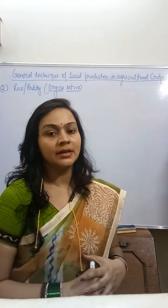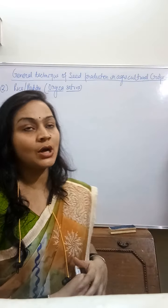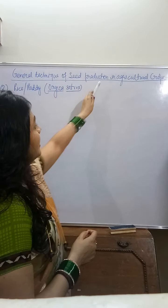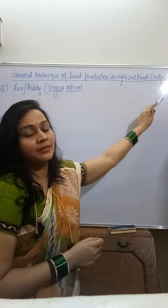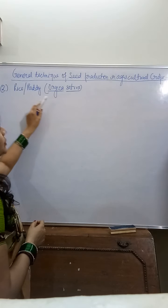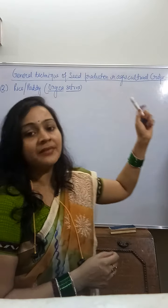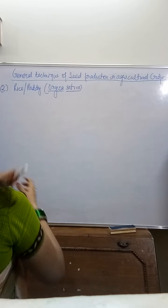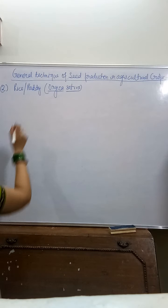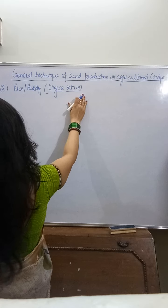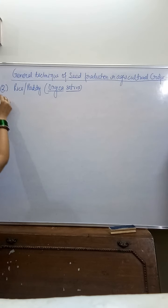Hello students. In the series of general technique of seed production in agricultural crops, we will discuss about rice today. In the previous video, we had discussed about wheat, and now rice. Rice is also known as paddy and the botanical name is Oryza sativa.